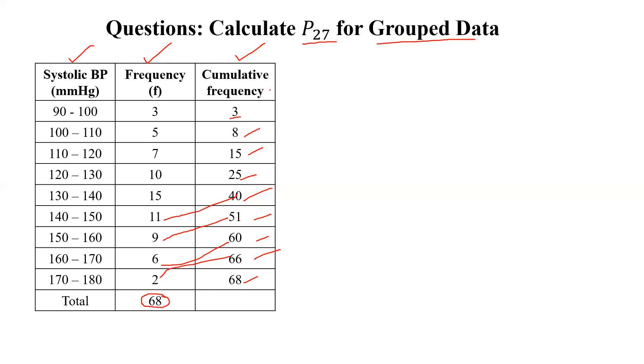Once we calculate cumulative frequency column, then we have to write the formula for P27. This is the formula: P27 equals L plus (27N divided by 100 minus cumulative frequency) divided by F, multiplied by W. This is the simple steps for P27.